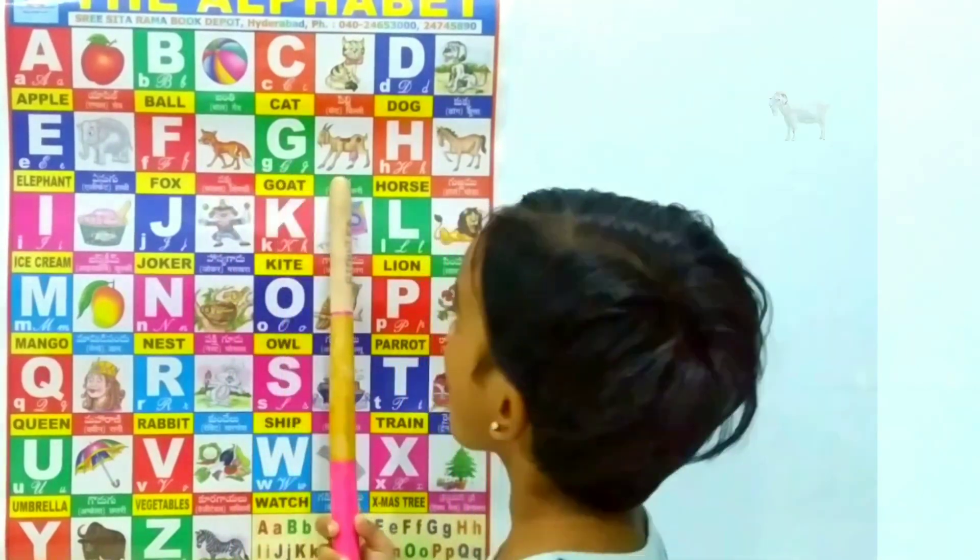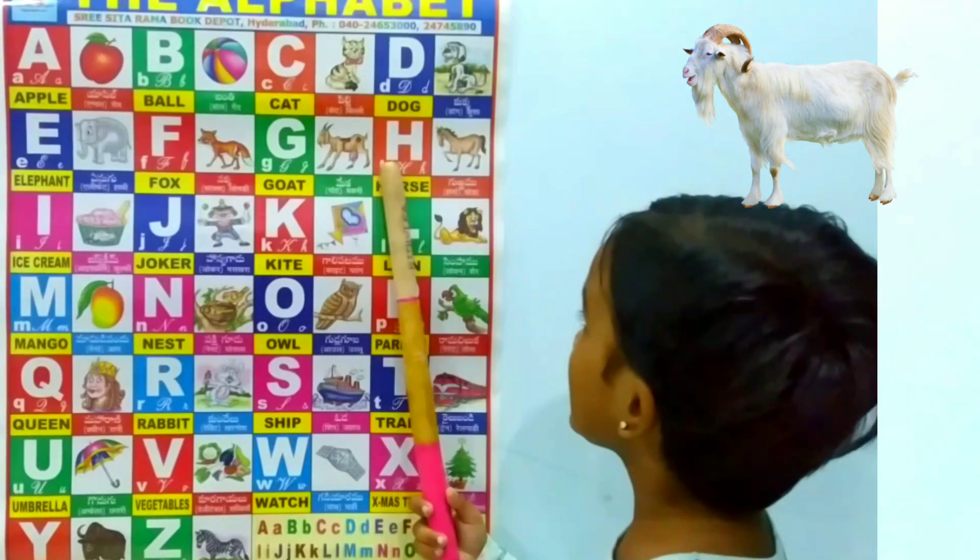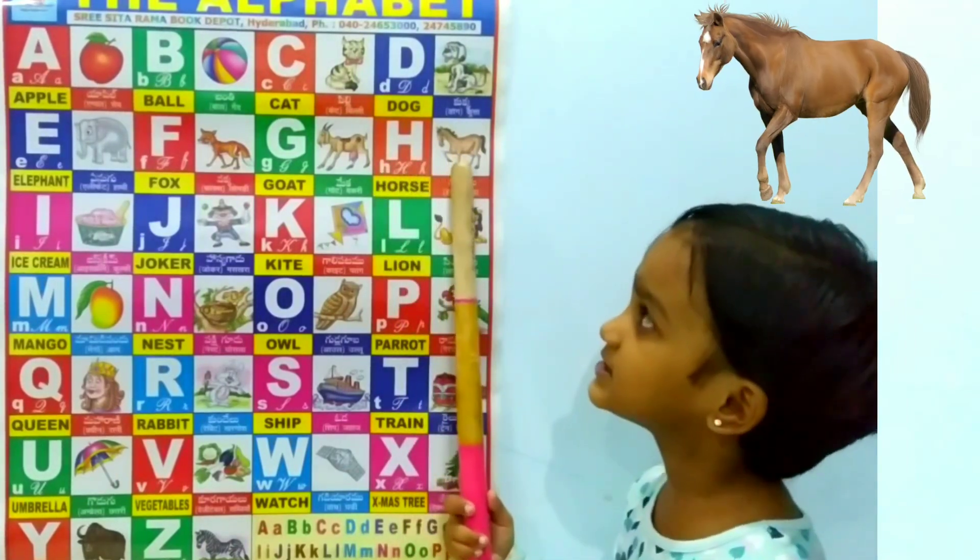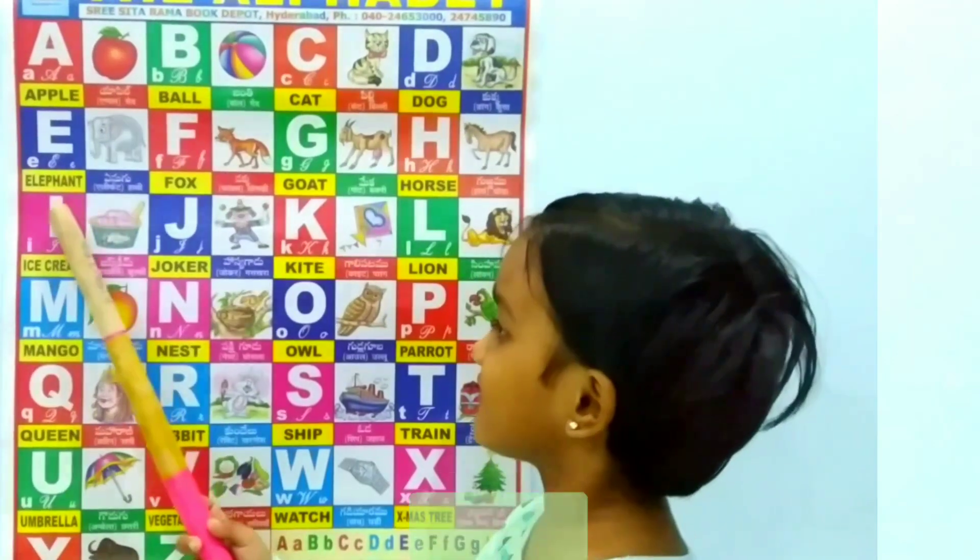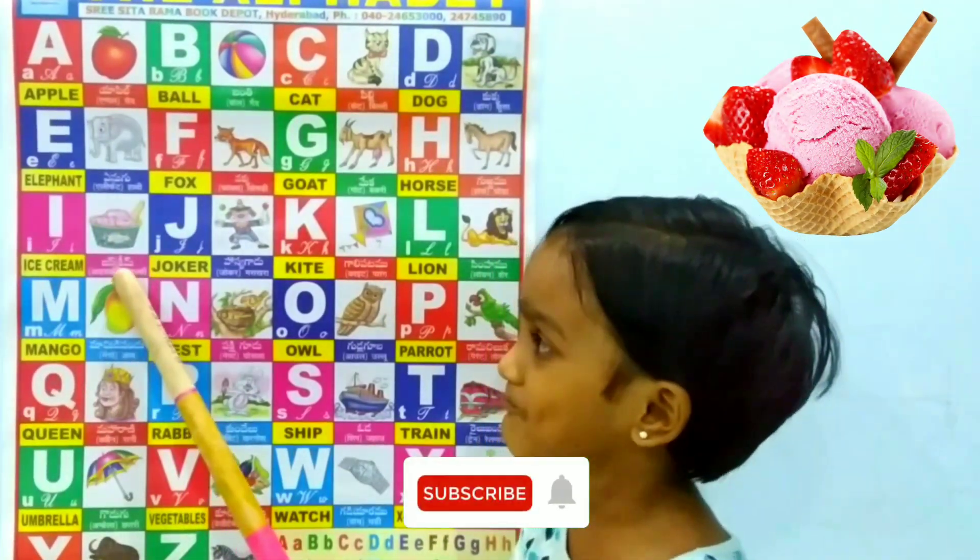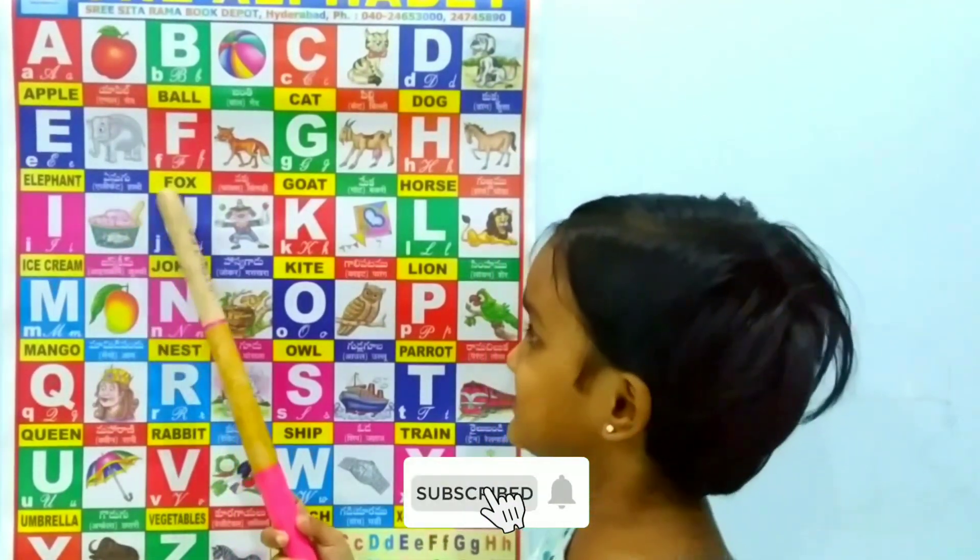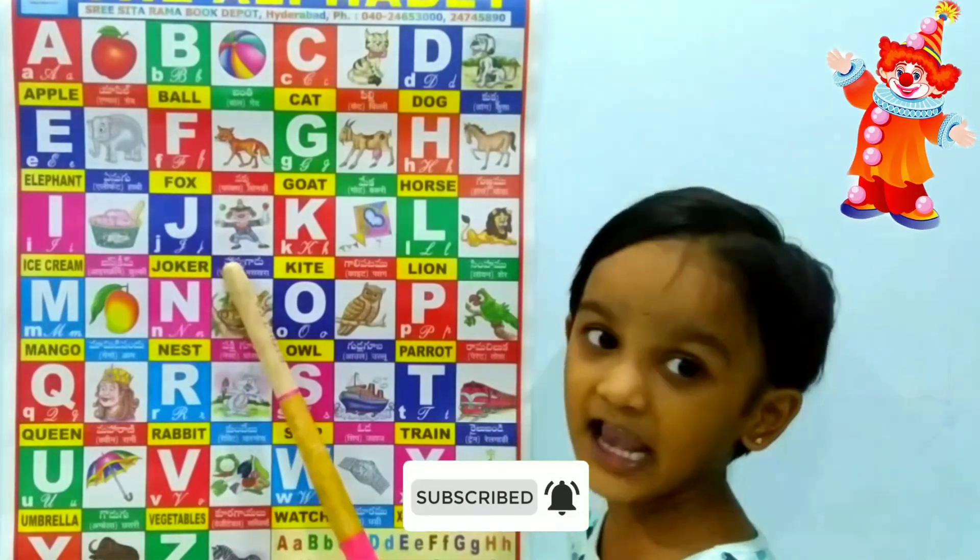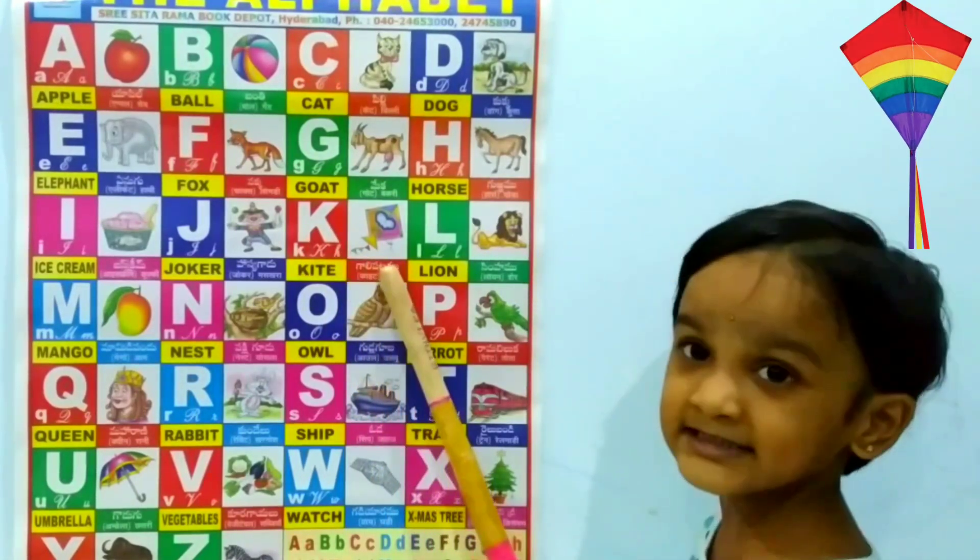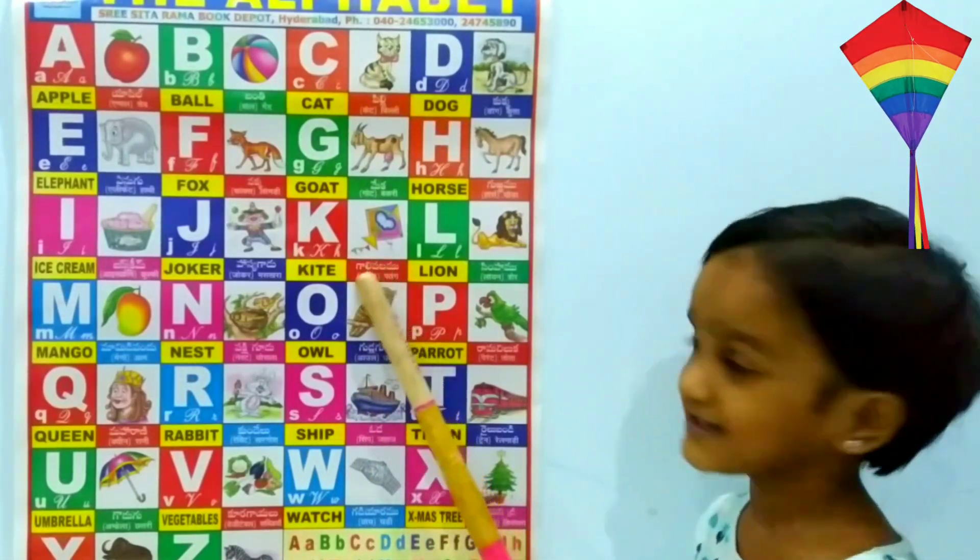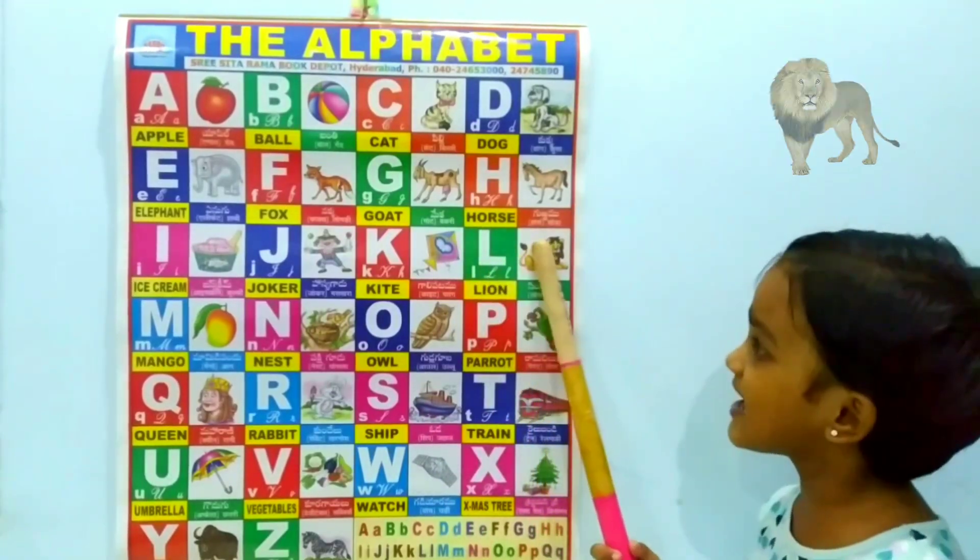G for Goat, H for Horse, I for Ice Cream, J for Joker, K for Kite, L for Lion